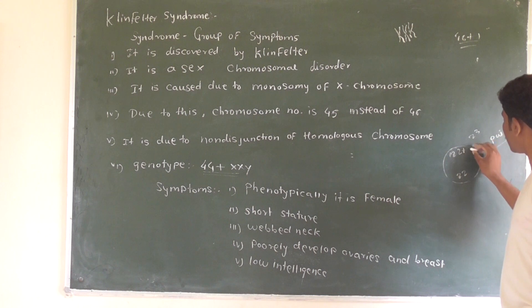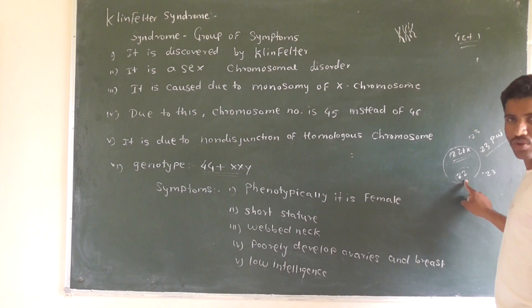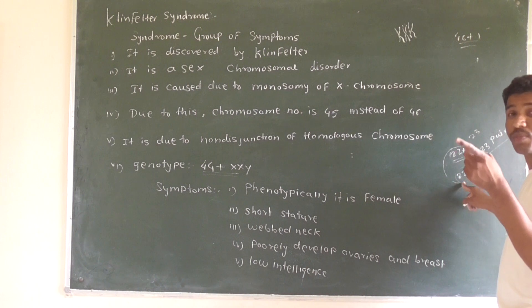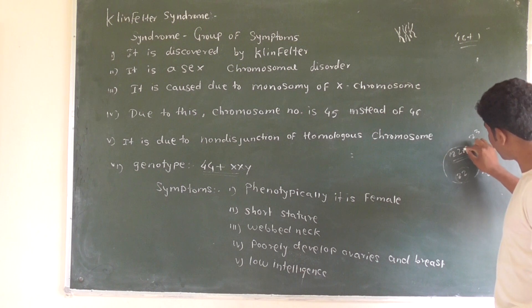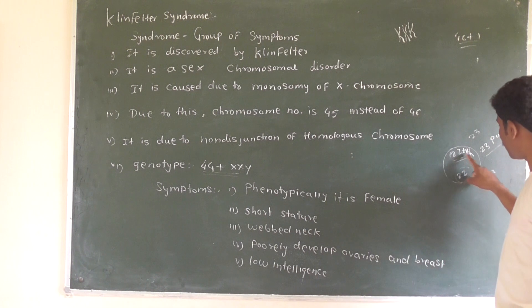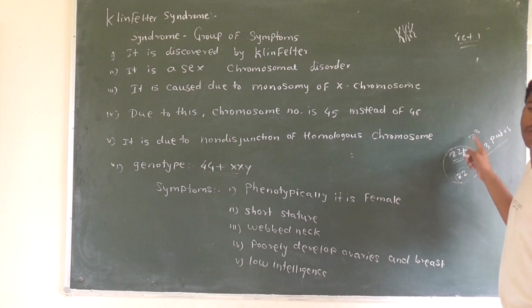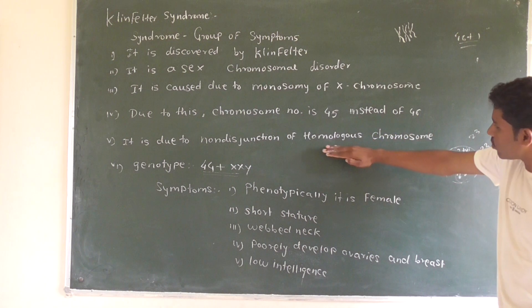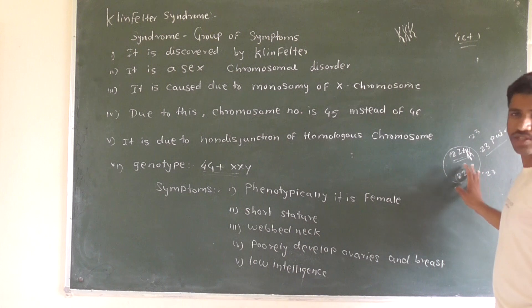If non-disjunction occurs, one gamete may receive 24 chromosomes — for example 22 autosomes plus 2 X chromosomes — and a sperm combining with such an egg would produce a cell with 47 chromosomes. This leads to either abnormal Turner syndrome with 45 chromosomes or Klinefelter syndrome with 47 chromosomes.